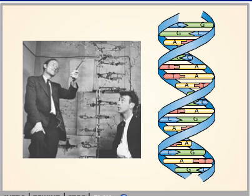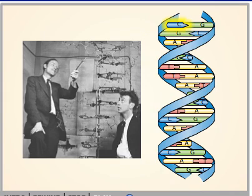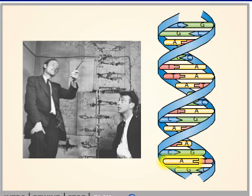In 1953, James Watson and Francis Crick built their model of the structure of DNA, the principal features of which are still accepted today. DNA consists of two strands that are complementary in base sequences to each other. A cytosine base in one strand always pairs with a guanine base in the other, and an adenine base in one strand always pairs with a thymine base in the other.